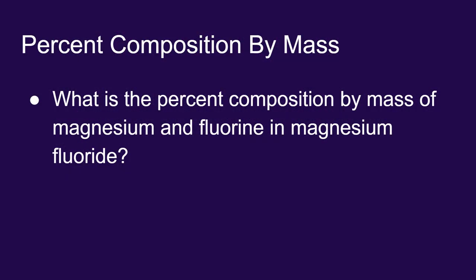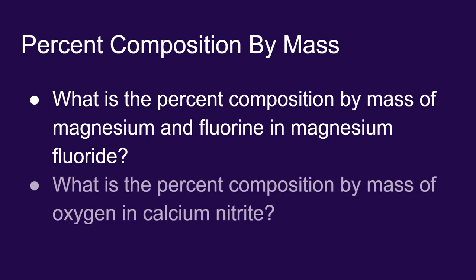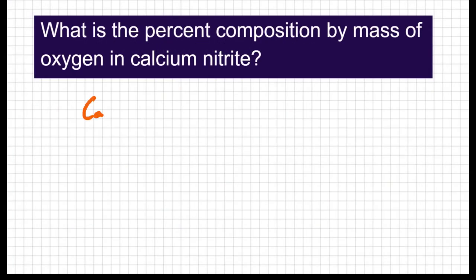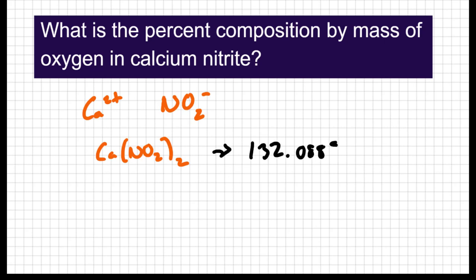Let's move away from the magnesium fluoride, and let's try a different compound. Let's find the percent composition of oxygen in calcium nitrite. Calcium forms a 2 plus charge as an ion, and nitrite is NO2 minus, it's not nitrate, it's nitrite. So calcium nitrite is Ca(NO2)2. So I've got one calcium, two nitrogens, and four oxygens in this compound. So when I find their molar mass, I get 132.088 grams per mole.